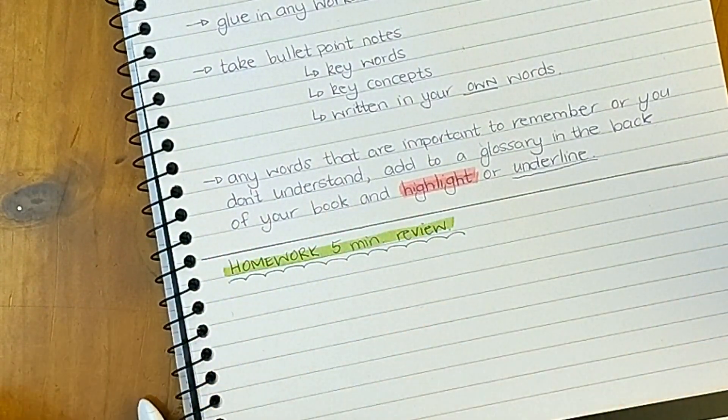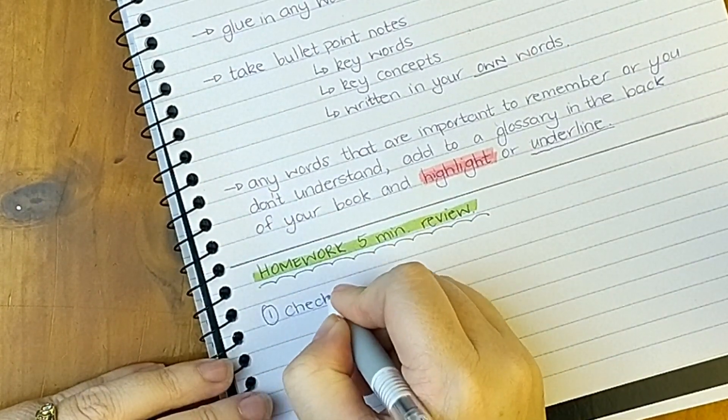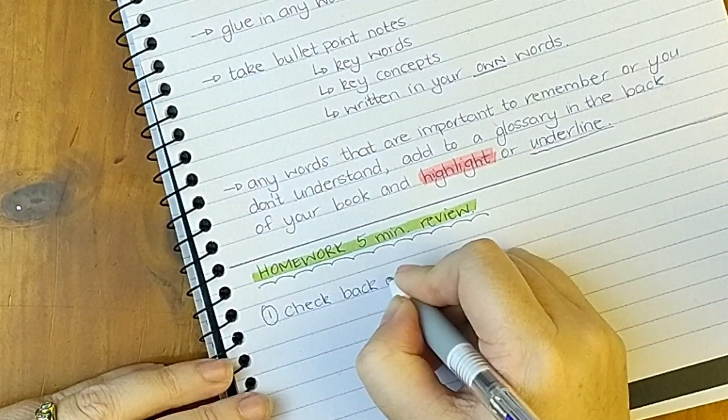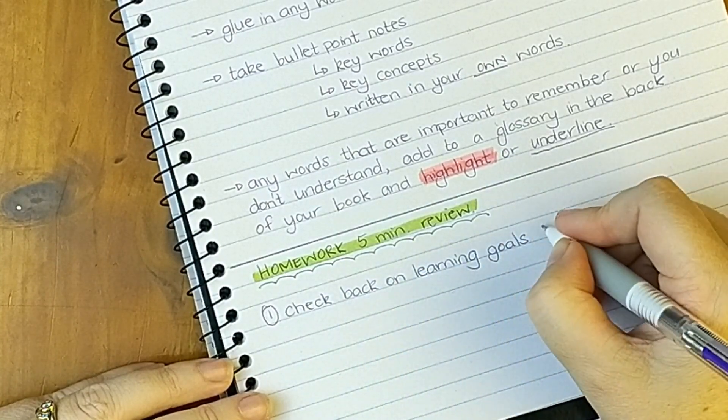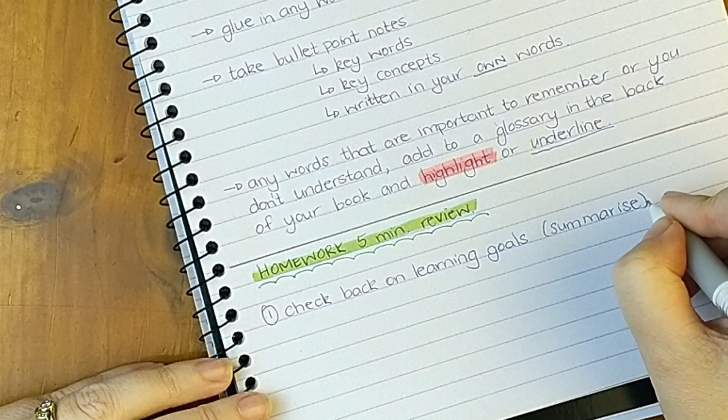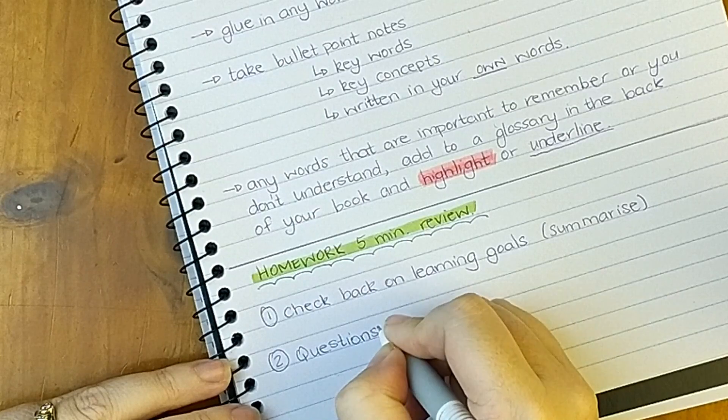The first thing you're going to want to do is you want to check back on your learning goals. You want to see if you actually have indeed achieved the learning goals for that lesson and you might want to summarize what you actually did achieve.